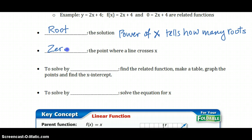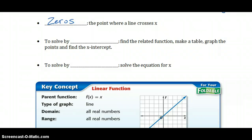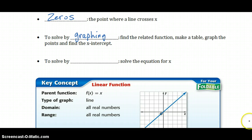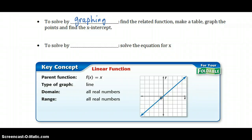The zeros is the point where a line crosses x. To solve by graphing, you have to find the related function, make a table and graph the points, and then find the x-intercept. Plot the points and see where the line crossed the x-axis. That's how we'll find the root, or the solution.